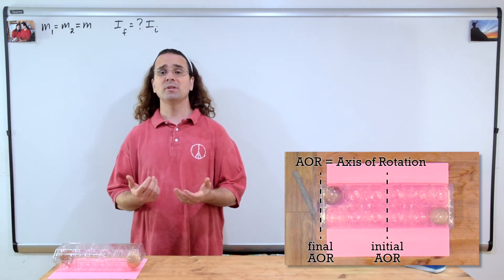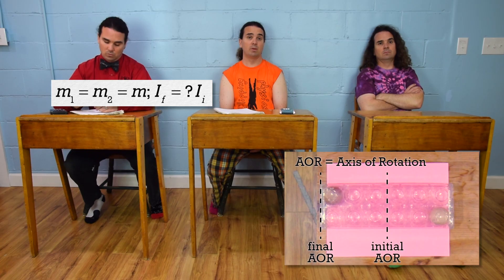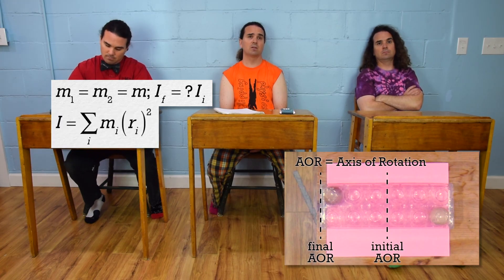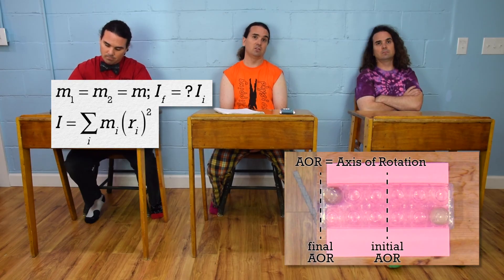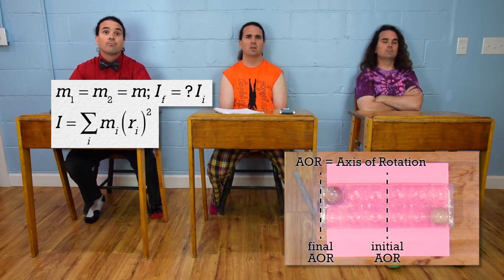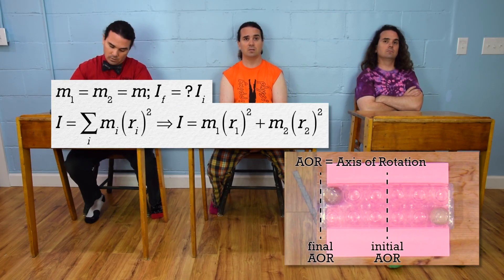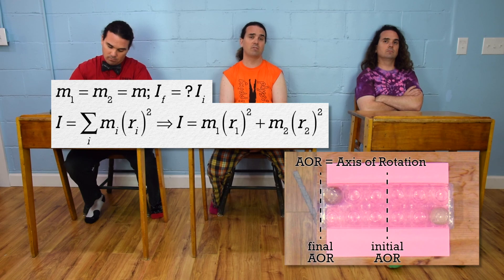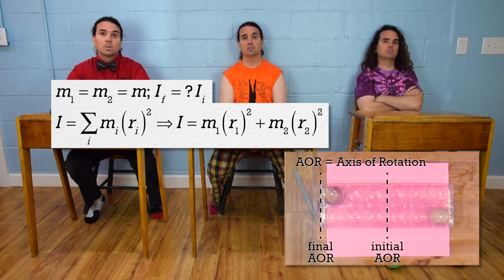Bobby, what will our moment of inertia equation be? Moment of inertia equals the sum of the quantity mass times the square of the distance of each object from the axis of rotation. There are two objects, so I = m₁(r₁)² + m₂(r₂)².